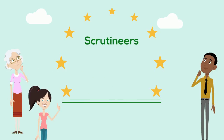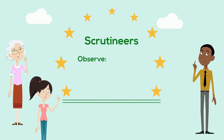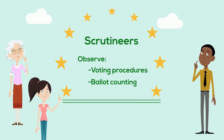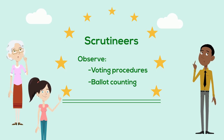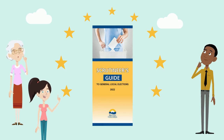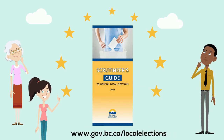Candidates may choose to appoint scrutineers to observe voting procedures and ballot counting. Check with the chief election officer for more details, or read the scrutineer's guide to general local elections in BC, available online.